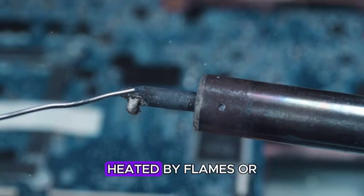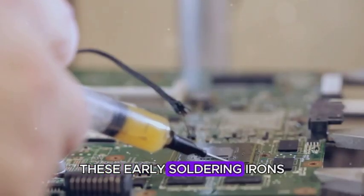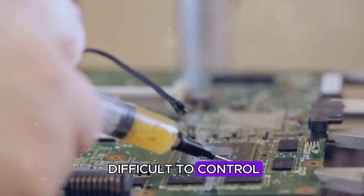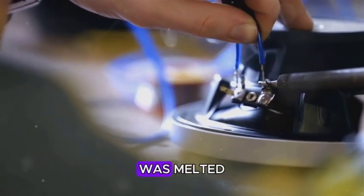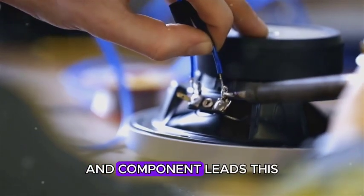Soldering irons, heated by flames or electrical resistance, were the tools of the trade. These early soldering irons, while functional, were often cumbersome and difficult to control. The solder itself, typically an alloy of lead and tin, was melted and used to create a conductive bond between wires and component leads.